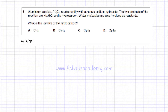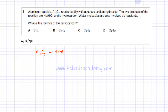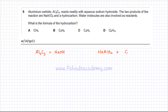The following question states that there is aluminium carbide, Al4C3, which reacts readily with aqueous NaOH. We need to write and construct the equation. The two products of the reaction are NaAlO2 and a hydrocarbon.